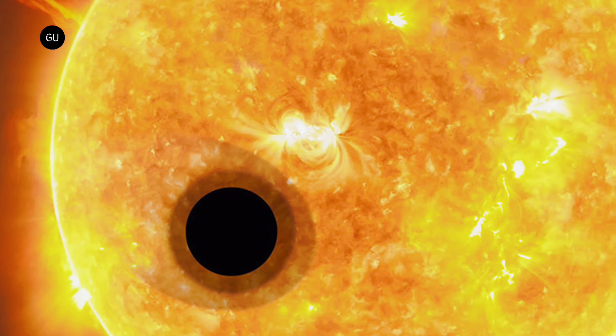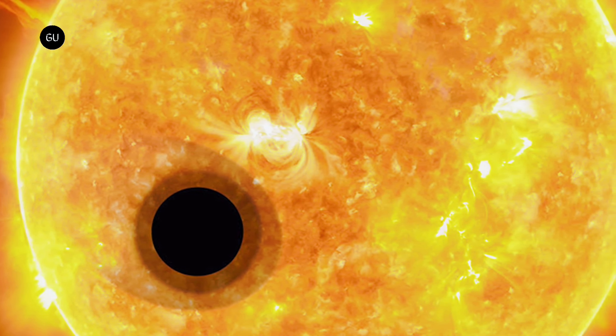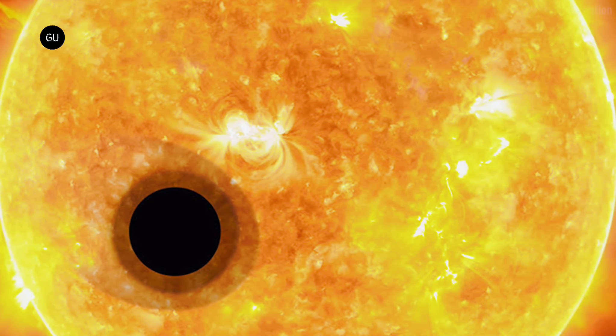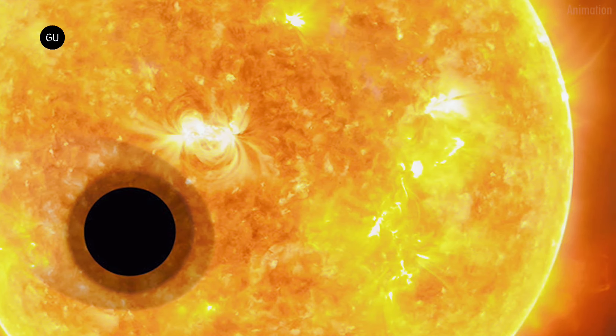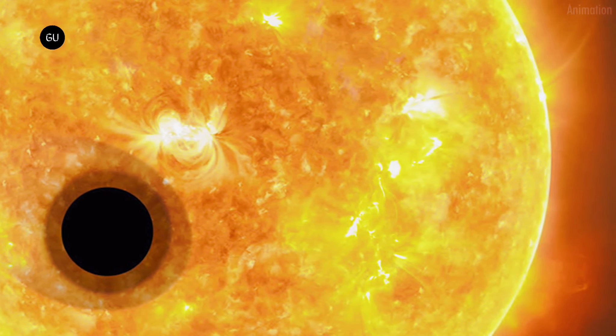The planet, known as AU Mike B, is located in one of the youngest planetary systems ever observed, hosted by the star AU Microscopii, which is less than 100 million years old and situated 32 light years from Earth.